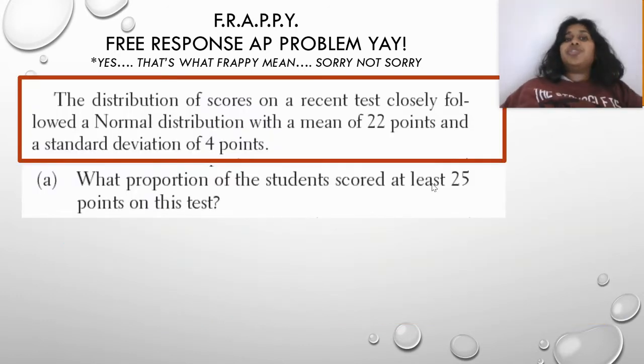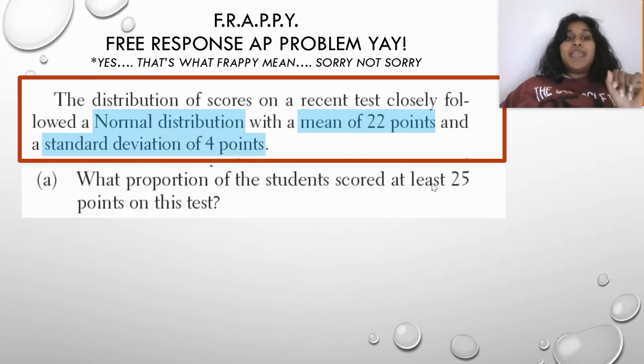All right. So the distribution of scores on a recent test closely follow a normal distribution with a mean of 22 points and a standard deviation of four points. What proportion of the students scored at least 25 points on this test? Cool. So some very important information is given to us. We're told it's a normal distribution. We have a mean value of 22 and a standard deviation of four.